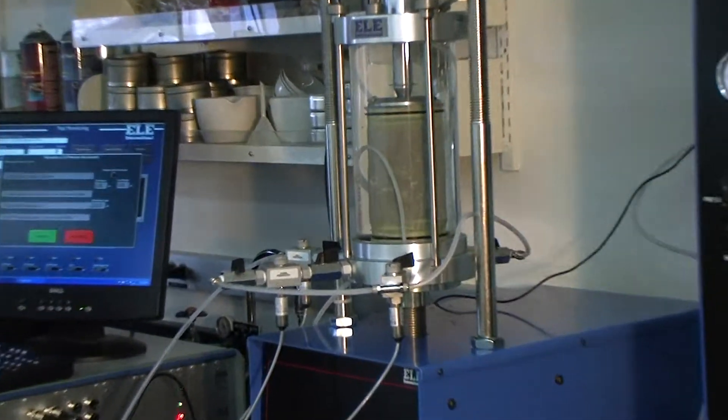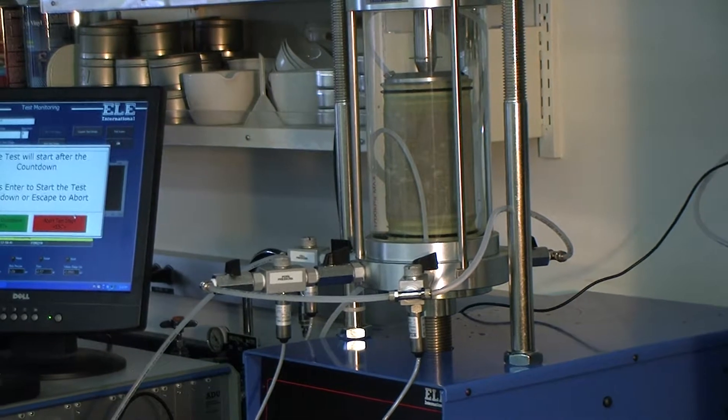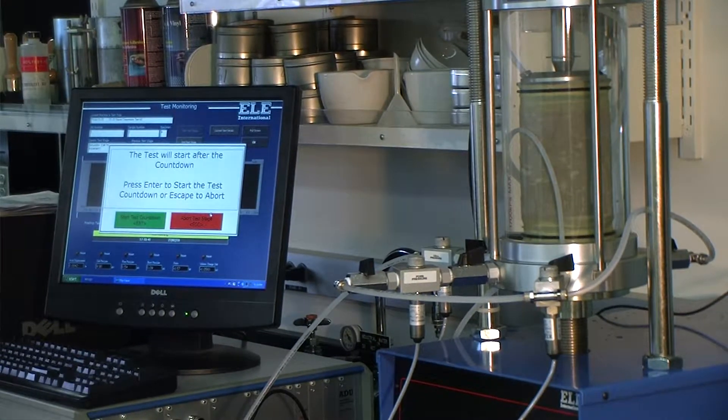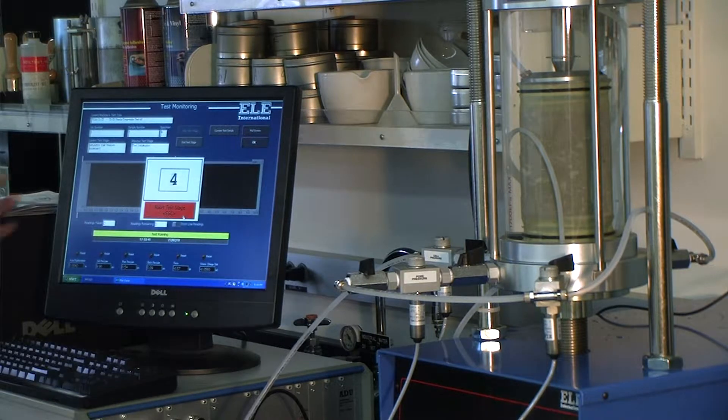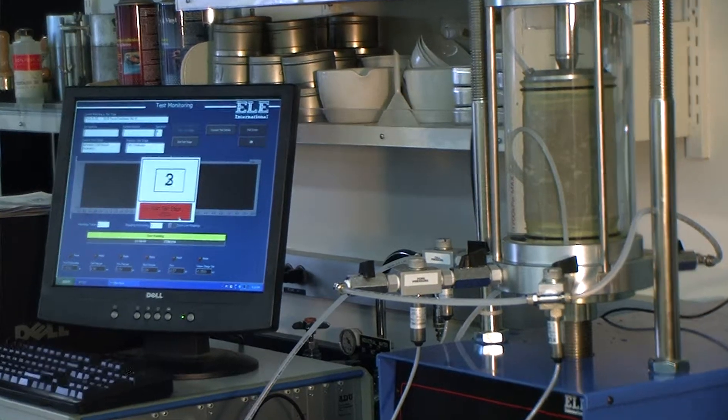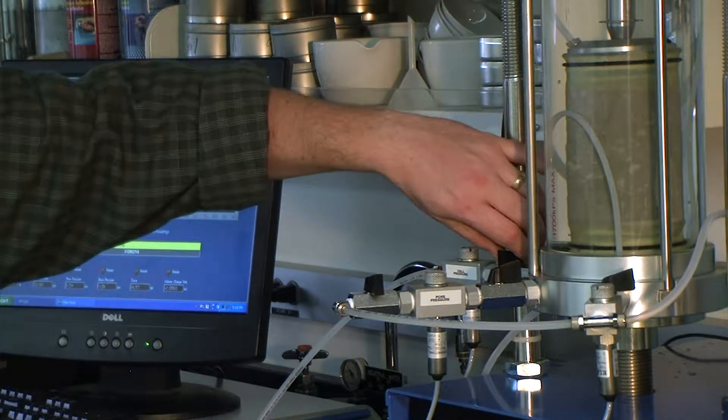We'll hit continue, and that'll bring up another screen. We'll start out to the countdown, so click the green button if you want to continue on. Five, four, three, two, one, and then a double beep. Open the cell pressure.